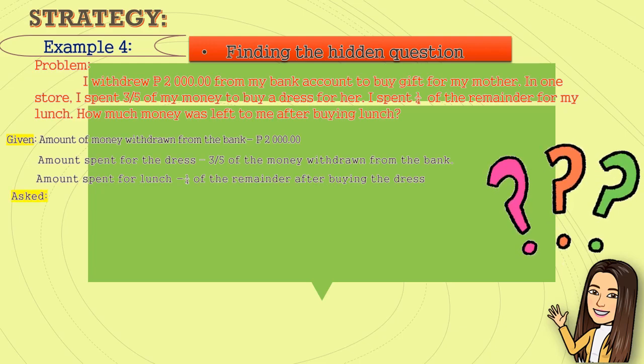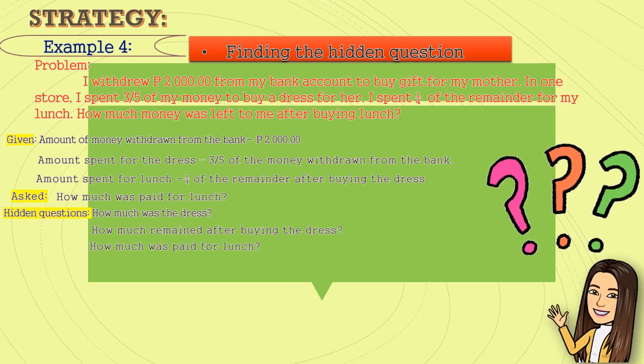What is asked in the problem? How much was paid for lunch? There are hidden questions. And these are: How much was the dress? How much remained after buying the dress? And how much was paid for lunch?